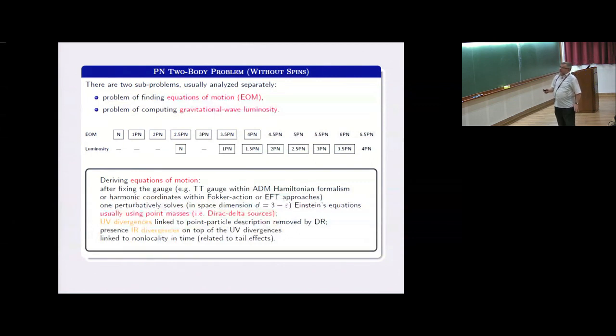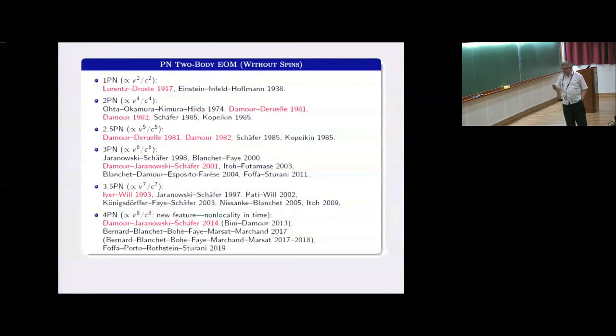As we know, the two-body problem can be divided into two sub-problems: the problem of finding equations of motion and the problem of computing gravitational wave luminosities. Equations of motion start from the Newtonian level. All next levels are completely worked out up to the 4.5 post-Newtonian level. And here you have luminosities. You see that there is a shift between the two lines because the first radiative reaction effects can be seen at the level of equations of motion at 2.5 PN level. This means that knowing this, you can just from the equations of motion derive the leading order luminosity, the textbook formula for luminosity of two-body systems.